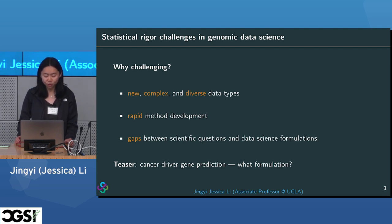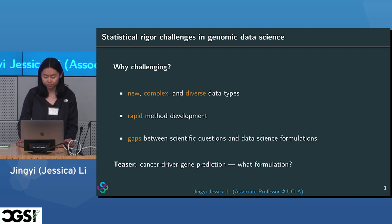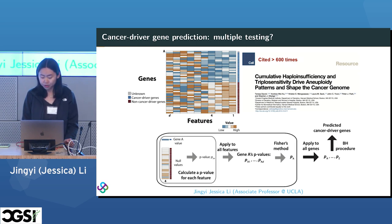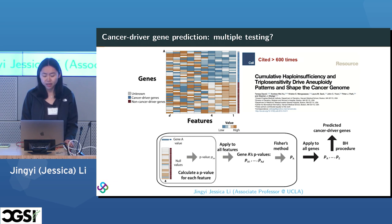There are also gaps between scientific questions and data science formulations. As a teaser, I'll show one example about how to predict cancer driver genes. This is a Cell paper from 2012 that tackled cancer driver gene prediction. The data is a matrix where rows are genes and columns are features — genomic features like how many mutations they contain. Some genes are known cancer drivers (blue), others are non-cancer drivers (red), but most genes are gray — unknown.